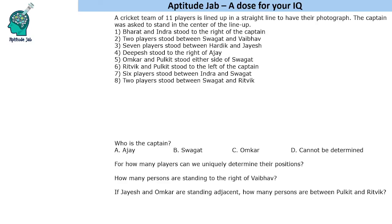Hello everyone, welcome to Aptitude Jab. This is a set based on arrangement of people in a row. There are 11 players of a cricket team who have to have their photograph taken. The captain is asked to stay at the center of the lineup. Let us number the positions 1 to 11 from left to right.